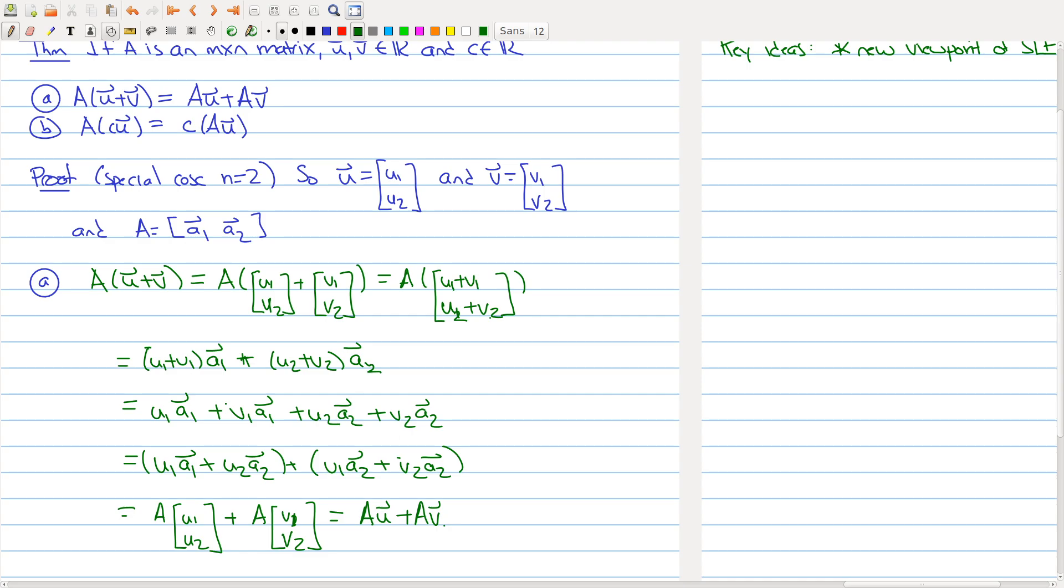Now, in doing this case where n equals 2, you can think about how this would change if you had, instead of 2 entries, if you had n entries.